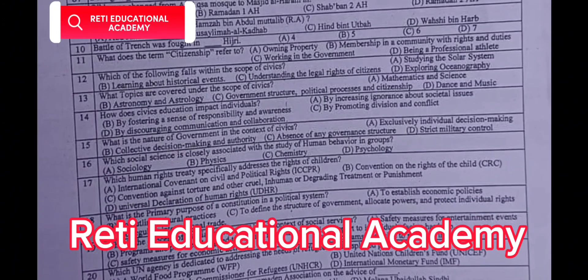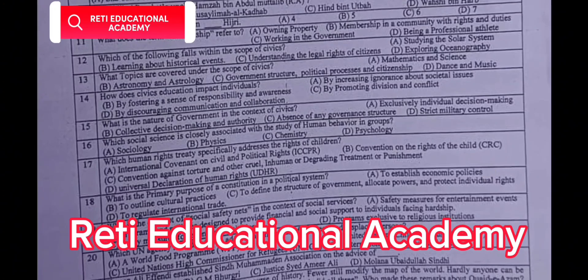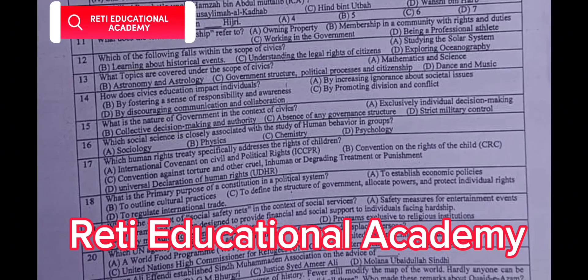Question number 13: What topics are covered under the scope of civics? A. Mathematics and science. B. Astronomy and astrology. C. Government structure, political processes and citizenship. D. Dance and music. The correct answer is C: Government structure, political processes and citizenship.